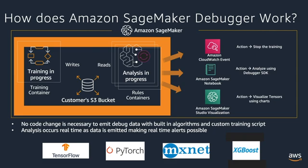SageMaker Debugger provides a set of built-in rules created by data scientists and engineers at Amazon to identify common problems while training machine learning models. Debugger supports major machine learning frameworks such as TensorFlow, PyTorch, and MXNet, and also the SageMaker pre-built algorithm XGBoost.